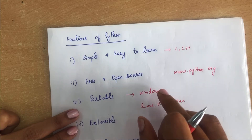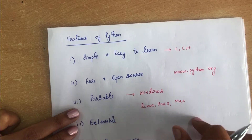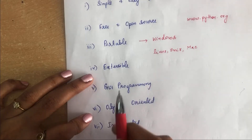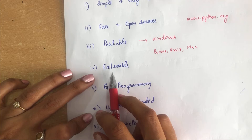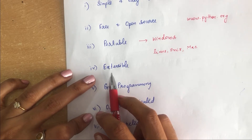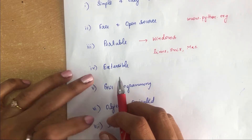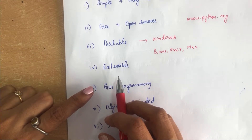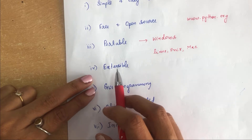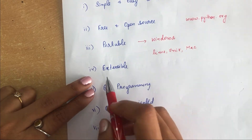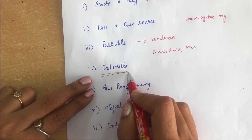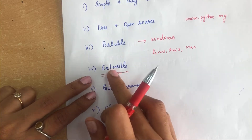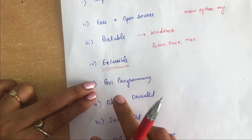Writing code on one platform and running it on another is possible with Python — that is why it is called portable. Next is extensible. If needed, you can write your Python code in other languages like C or C++. This makes Python an extensible language, meaning it is extendable to other languages as well.